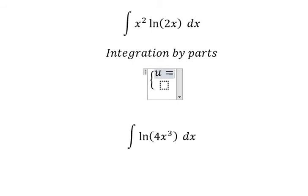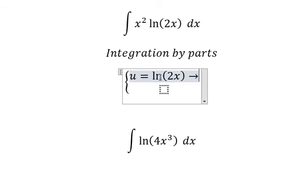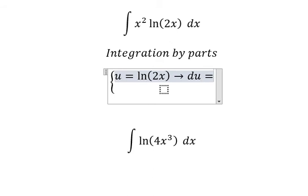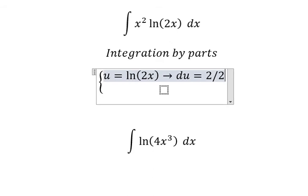ln(2x). Later we do the first derivative for both sides and we have 2 over 2x dx.